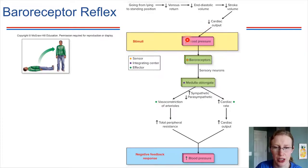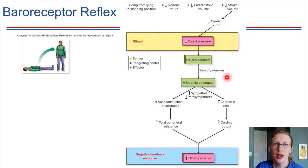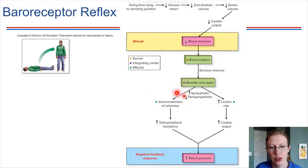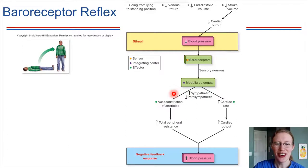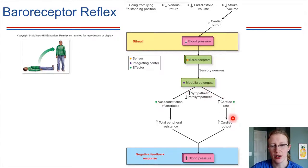That drop in arterial blood pressure modifies the signals sent by the baroreceptors, sending a signal up to the nervous system. The signal is received and processed by the medulla, which does a couple of key things: it causes vasoconstriction of the arteries, increasing resistance and helping to increase blood pressure, and it causes an increase in heart rate, which increases cardiac output and also feeds into raising blood pressure.